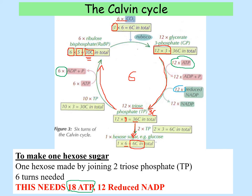Each cycle uses two molecules of reduced NADP, so six cycles require twelve molecules of reduced NADP to make one glucose molecule. You need to know these numbers and be able to talk your way through them. The key thing to remember is that five out of every six — or ten out of every twelve — molecules of triose phosphate are converted back into ribulose bisphosphate.